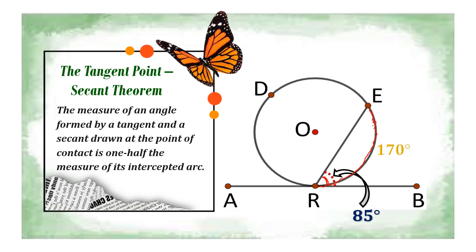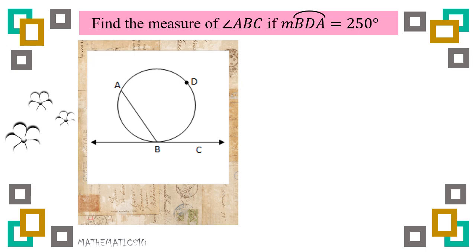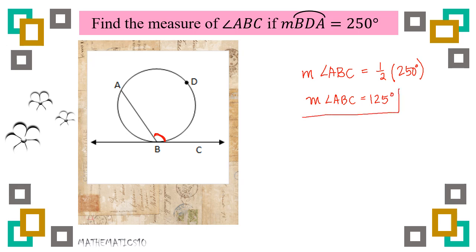Another example: find the measure of angle ABC. You need the measure of arc ADB, which is given as 250 degrees. Therefore, the measure of angle ABC equals one-half of 250 degrees, which is 125 degrees.